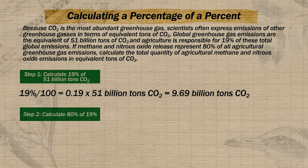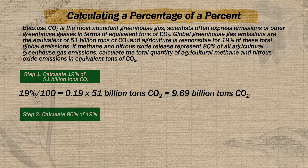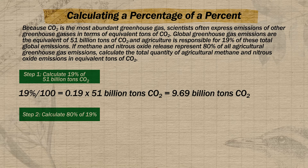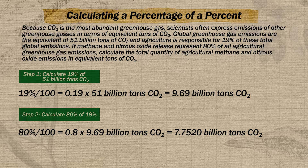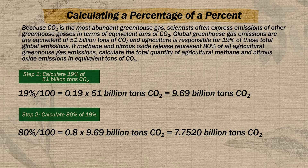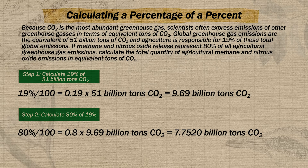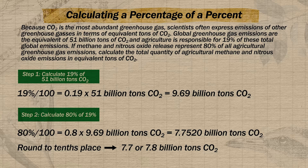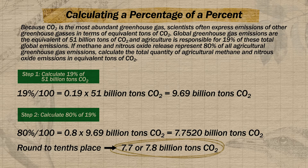For step two, we calculate 80% of those 9.69 billion tons, since 80% of all agricultural emissions come from methane and nitrous oxide. We convert 80% to a decimal to get 0.8, then multiply 0.8 by 9.69 billion tons to arrive at 7.752 billion tons. Since FRQ scoring guides typically round to the tenth place, I would expect a scoring guide to accept either 7.7 or 7.8 billion tons of CO₂.